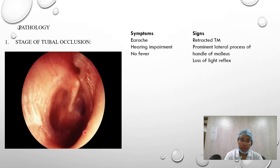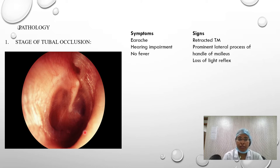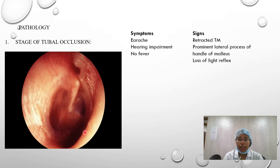Regarding pathology, there are four main stages of acute otitis media. The first is the stage of tubal occlusion. Here, infection spreads from the nasopharynx into the middle ear through the eustachian tube. Blockage of the eustachian tube decreases middle ear pressure, leading to retraction of the tympanic membrane. The patient presents with earache and decreased hearing, but there may not be fever.